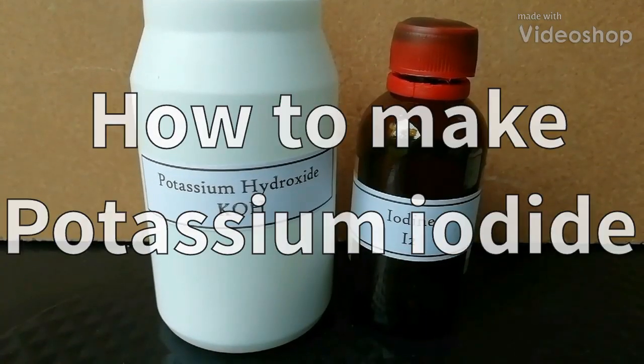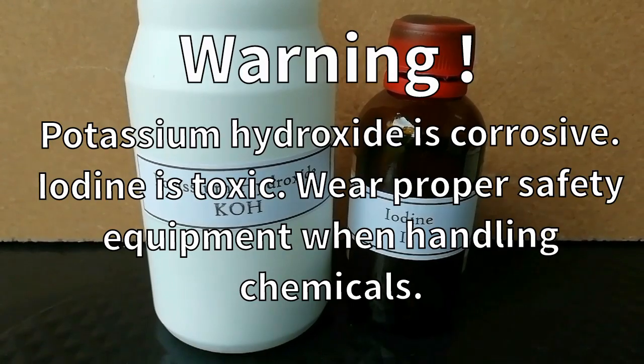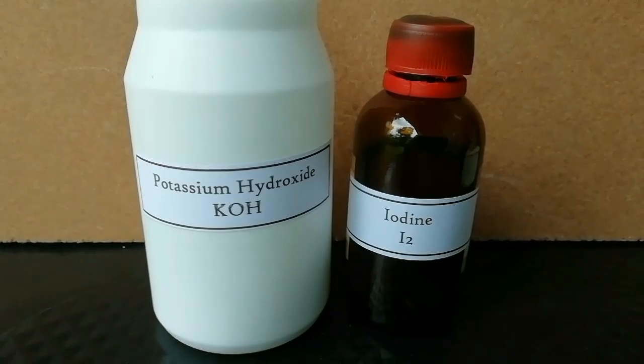How to make potassium iodide? Warning: potassium hydroxide is corrosive, iodine is toxic. Use proper safety equipment when handling chemicals.